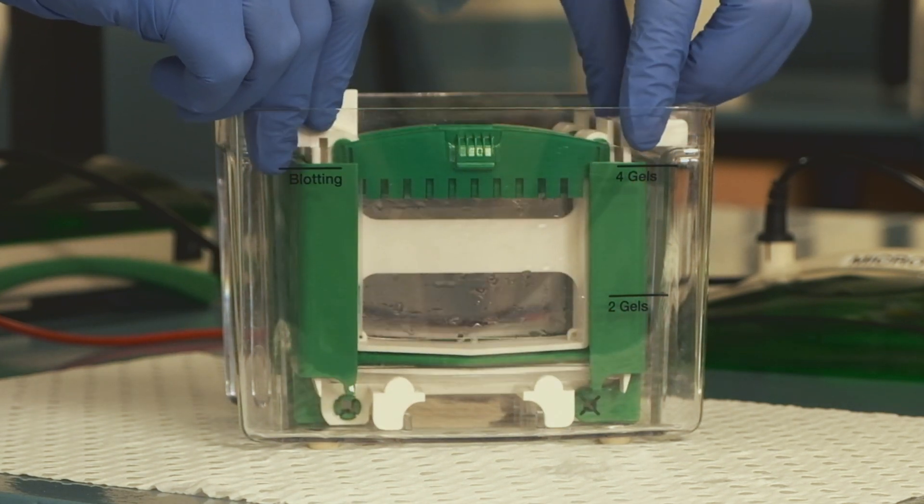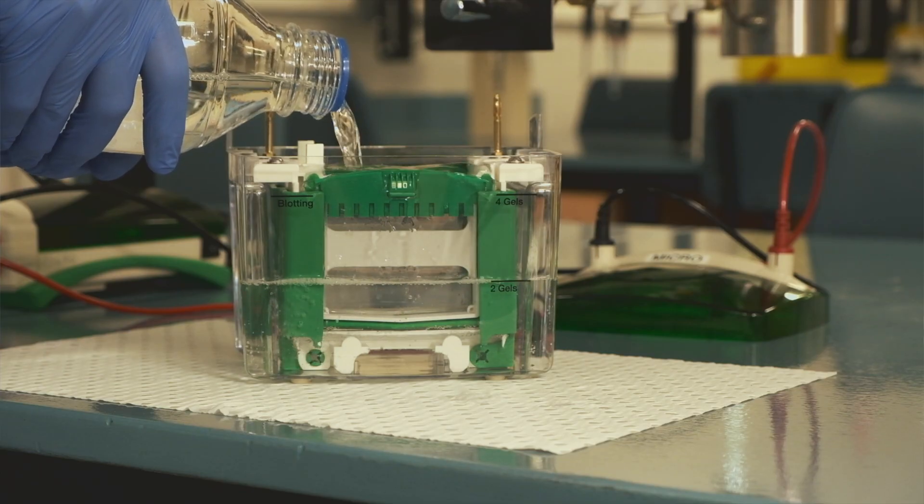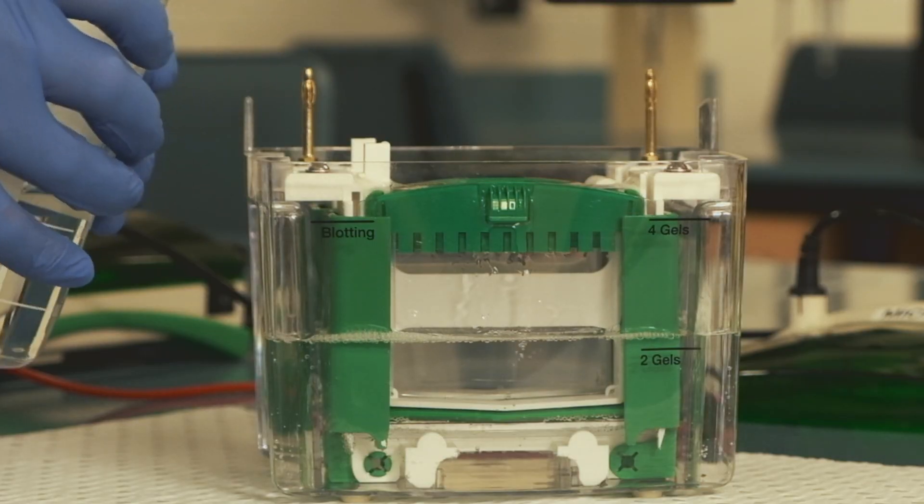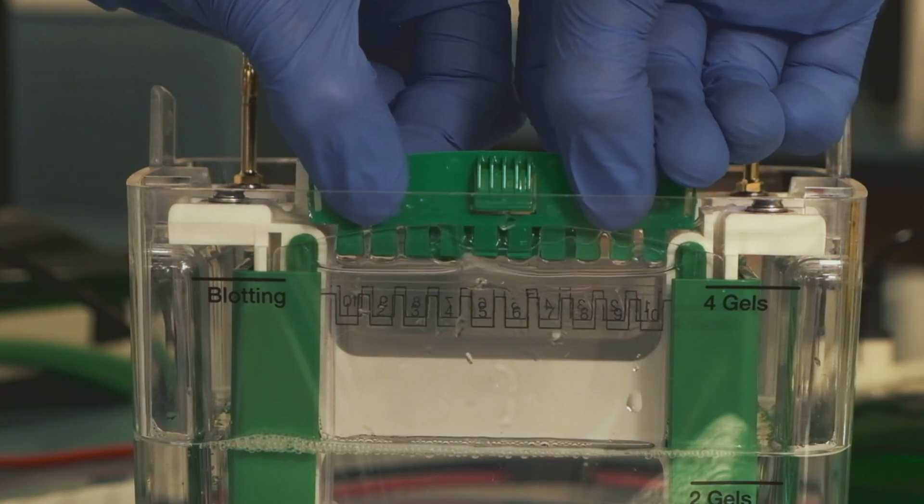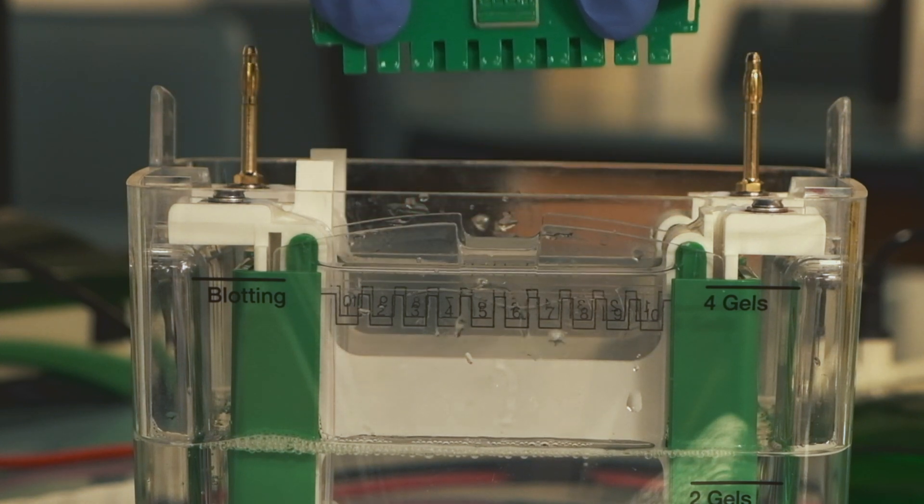The gels are clamped into the holding apparatus, and buffer is applied to fill the inner space and about one-third of the entire tank. The combs at the top of the gel are now removed, making sure that this doesn't damage the gel underneath.